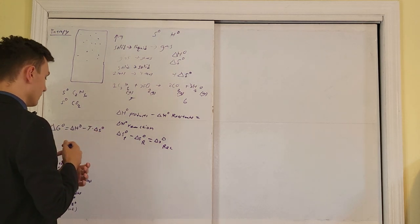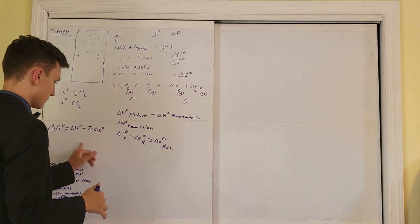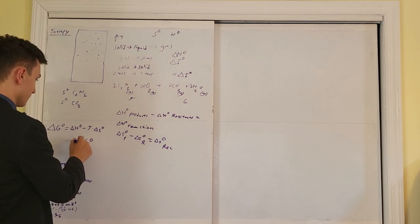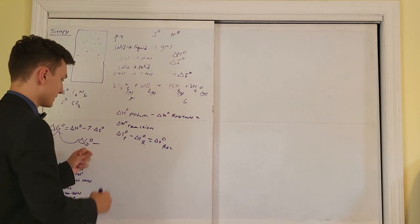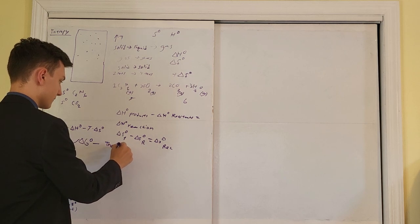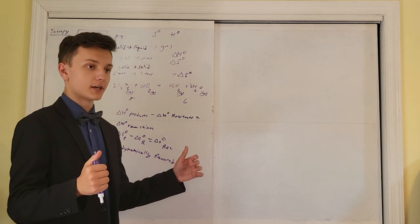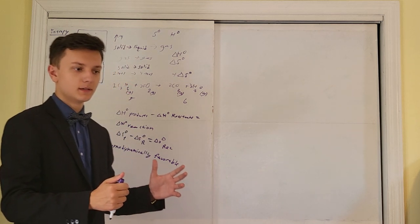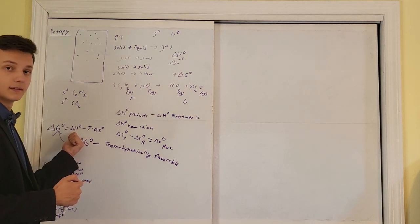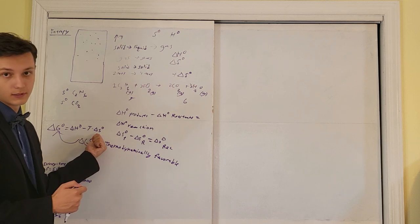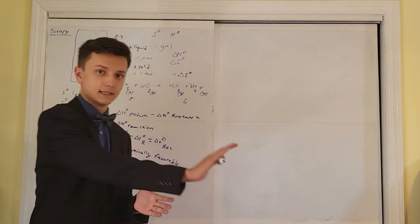Now let me introduce thermodynamic favorability. When delta G naught is negative, we consider that thermodynamically favorable. When a reaction is thermodynamically favorable, it releases energy — either in the form of heat, entropy, or both. Because it releases energy, we say it happens spontaneously.